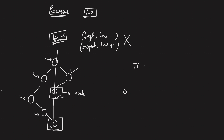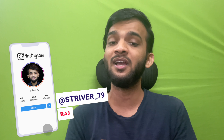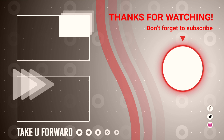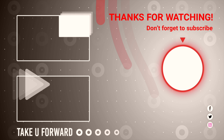The time complexity for level order traversal is O(n) and the space complexity is also O(n), depending on the structure of the tree. I hope you've understood the entire explanation and the code. If you found it helpful, please like this video — it took a lot of effort to make this entire tree series. Drop a comment, consider subscribing for more series, and I'll see you in the next lecture. Bye bye, take care.